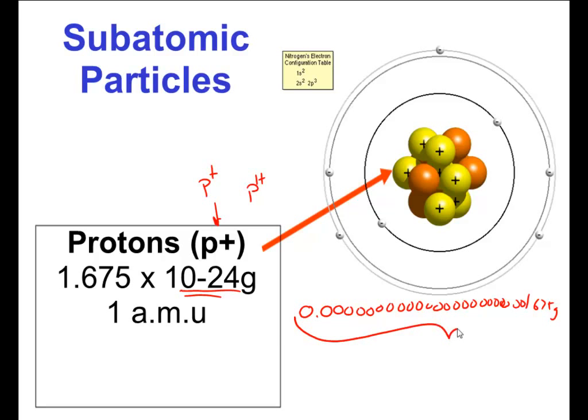But even still, this is ludicrous small. And how is any scientist really going to discuss that with another colleague? They have invented a way. And that is, they term it a relative mass. And the relative mass of a proton is known as 1 AMU, and it stands for Atomic Mass Unit.